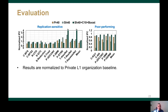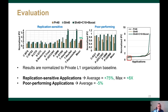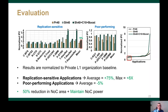These two figures show the performance of SH40+C10+BOOST on the y-axis in terms of IPC for both the replication-sensitive and the replication-insensitive applications, normalized to the private L1 design. We observe that SH40+C10+BOOST achieves an average IPC improvement of 75% and up to 8x for the replication-sensitive applications. As for the replication-insensitive applications, SH40+C10+BOOST incurs a 5% performance drop on average. Overall, across all applications, SH40+C10+BOOST can provide performance benefits for replication-sensitive applications and can recover the performance loss of the poor-performing applications. This is achieved while reducing the network area by 50% and maintaining the network power compared to the baseline.